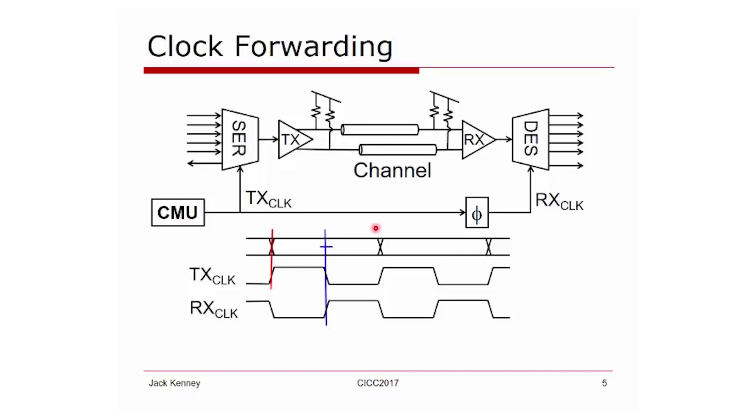Next, let's move on to the idea of clocking. Traditionally, in data converter applications, we had clock forwarded links. In the transmitter, you have a clock source, which I show here as a clock multiplier unit. It applies a transmit clock to a serializer.